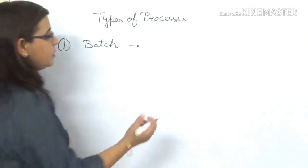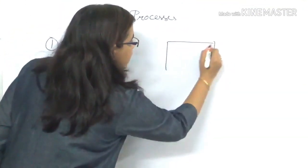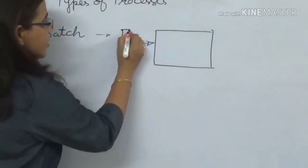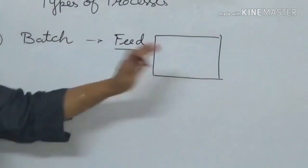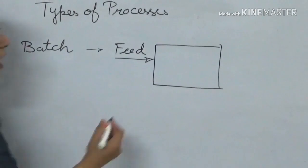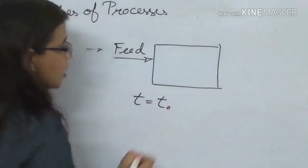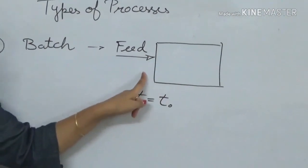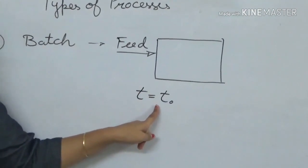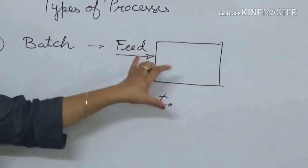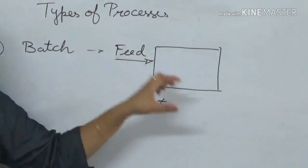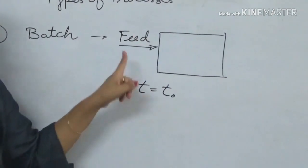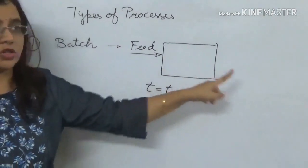In a batch process, you have a process unit which you charge with feed. Once you have charged the process unit with feed at time t₀, nothing crosses the system boundary after that. No material or mass crosses the system boundary after time t = t₀. We allow whatever process is happening — mixing or reaction — but we do not allow any mass to cross the boundary.